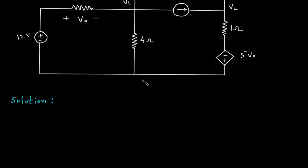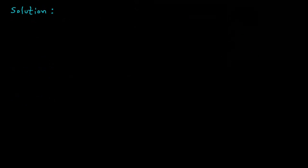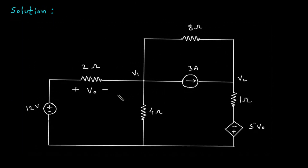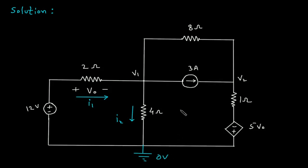Solution: first we will redraw the circuit. Then assume the direction of current — let's say this is I1, this is current I2. Also, this is the reference node with zero voltage, this is current I3, and this is current I4.